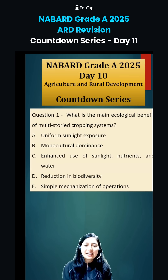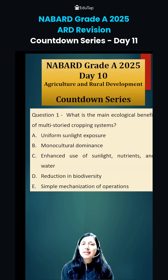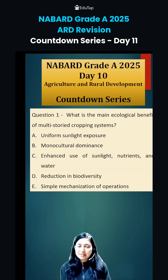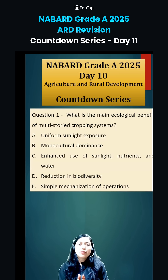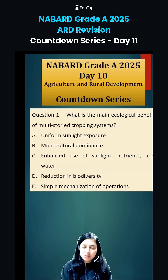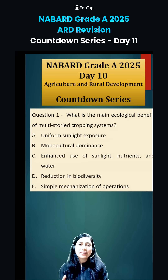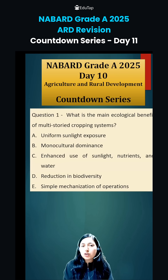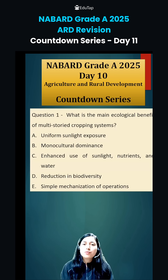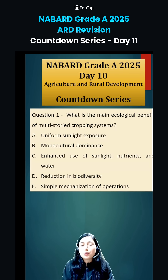The first question was regarding the ecological benefit of multi-storied cropping system. In this system, we are utilizing the vertical space — we grow tall-height crops with short-height crops. All those crops which are shade-loving are grown below the tall-height crops. Through this, we are diversifying the crops, increasing the rate of return from the same land, as well as using sunlight, water, and nutrients efficiently.